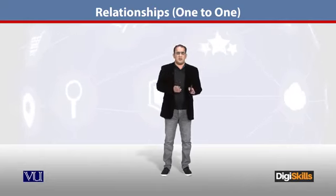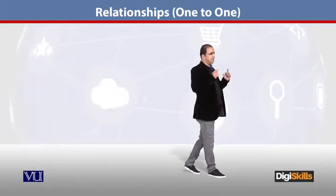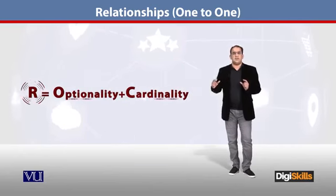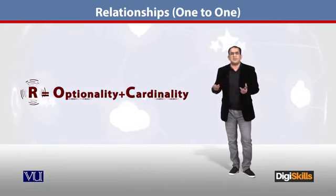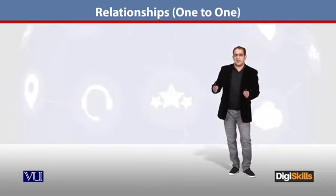So now students, we are done with optionality, we are done with cardinality. At the end of the day, the basic equation for relationships—R equals O plus C—we have now discussed all of that. So we are good to go to discuss how many types of relationships there are.